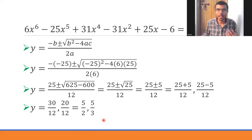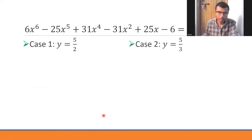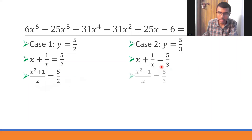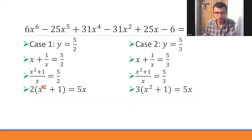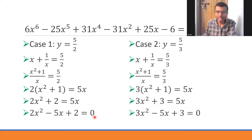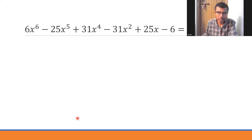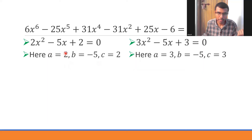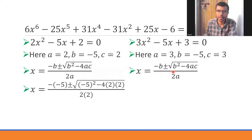We found y but need x. Recall y = x + 1/x. Case 1: x + 1/x = 5/2 → (x² + 1)/x = 5/2 → 2x² + 2 = 5x → 2x² - 5x + 2 = 0. Case 2: x + 1/x = 5/3 → (x² + 1)/x = 5/3 → 3x² + 3 = 5x → 3x² - 5x + 3 = 0. Solve each using the quadratic formula.